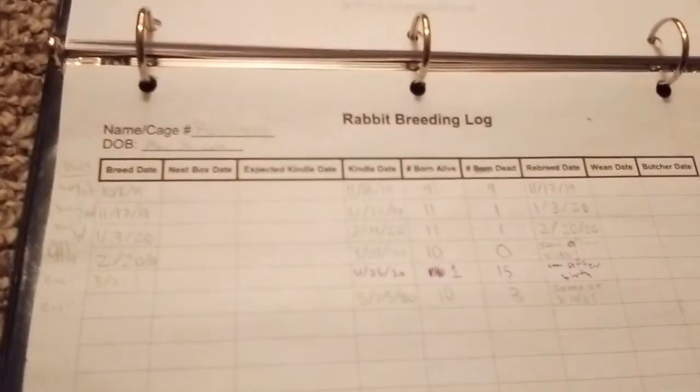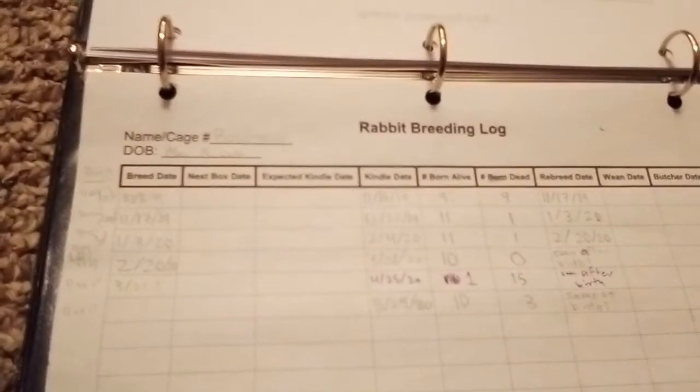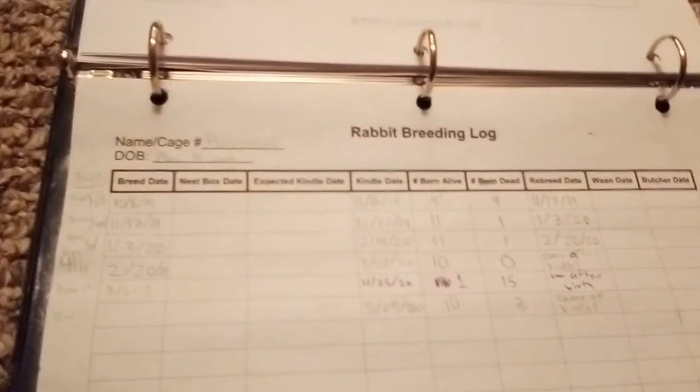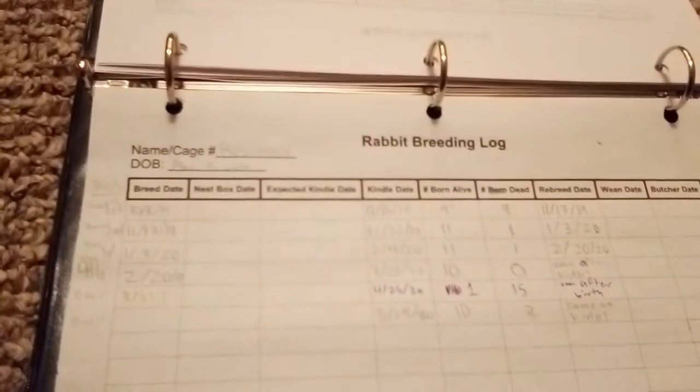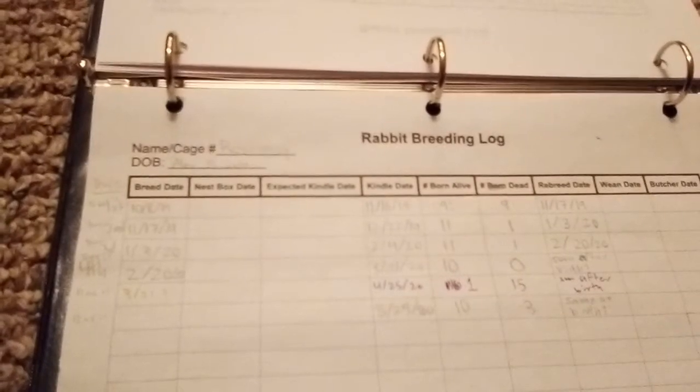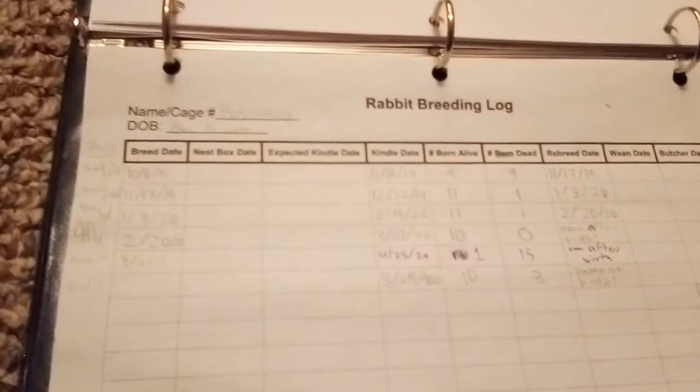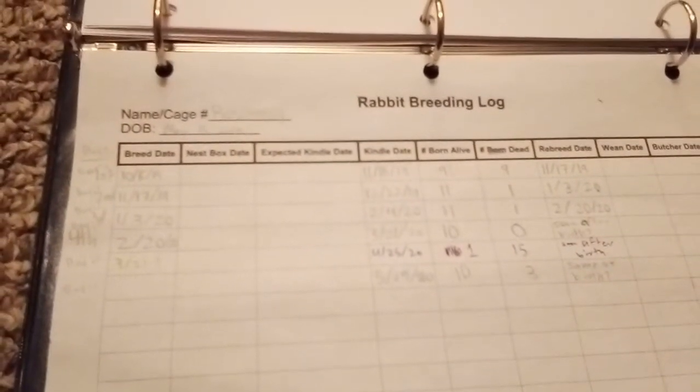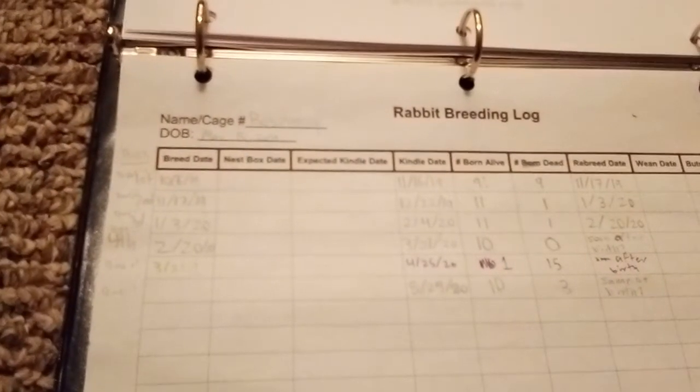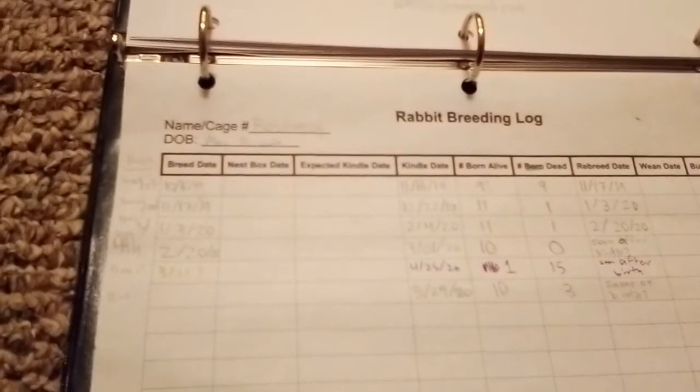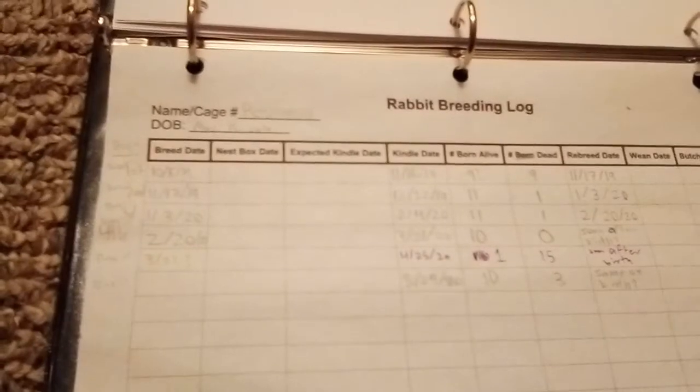Because our meat rabbits are in a colony setup, it's kind of hard to know what date they were bred. When they're born you can count back and kind of guess which day they were bred. Sometimes we catch a breeding, but a lot of the times we don't know when they were bred. The breed date is optional but I haven't really found that super necessary. Also because we have colony setup, we don't need to put nest boxes in - they are just there all the time, so the nest box date is kind of unnecessary.